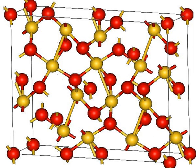Gold(III) oxide is the most stable oxide of gold. It is a red-brown, thermally unstable solid that decomposes at 160 degrees Celsius.